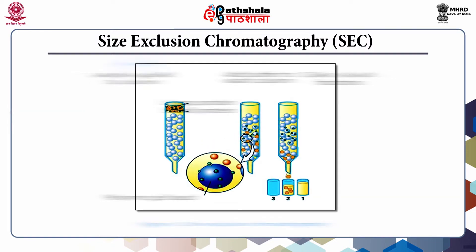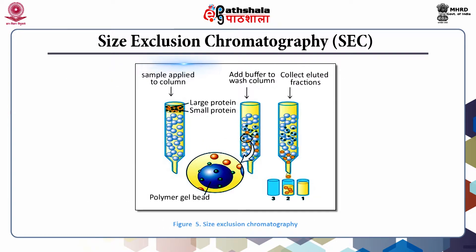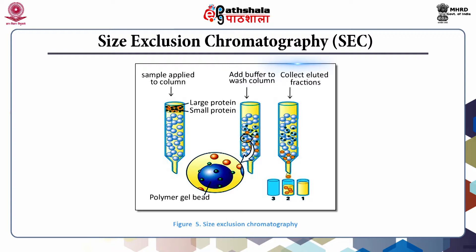When the mobile phase buffer is passed through the column, molecules are fractionated on the basis of their sizes and shape. Large molecules flow more rapidly through the column and emerge first because a smaller volume is accessible to them. Molecules of intermediate size will occasionally enter and exit from the beads and flow from the column at an intermediate position. Small molecules take a longer, more tortuous path and exit last, as can be clearly seen in this figure.